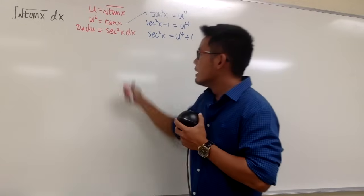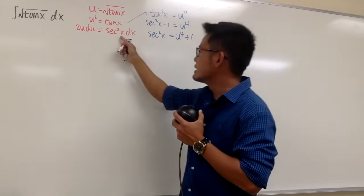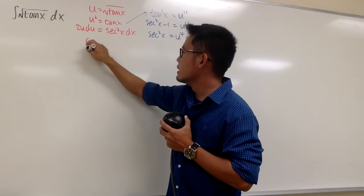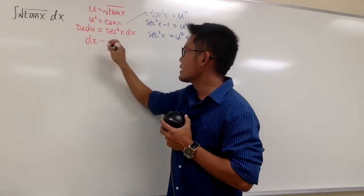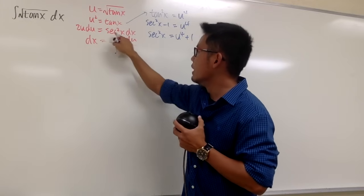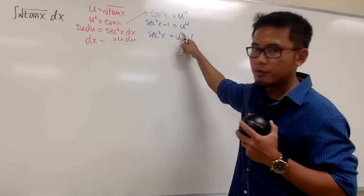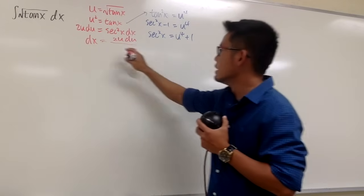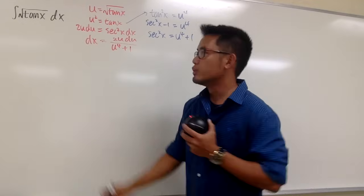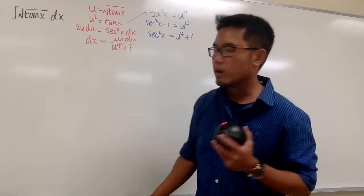Now from here, I'm going to isolate dx. Let's divide both sides by secant squared of x. So dx will be 2u du over secant squared of x, which is the same as u to the fourth power plus 1. Now we are ready to take this integral from the x world to the u world.